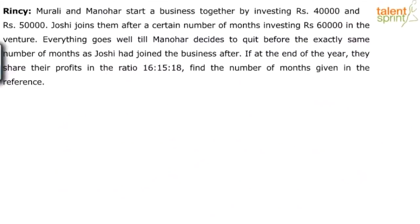Here's the next question, posted by Rinsi. This is a partnership question. Murali and Manohar start a business together by investing Rs. 40,000 and Rs. 50,000. Joshi joins them after a certain number of months, investing Rs. 60,000 in the venture. Everything goes well till Manohar decides to quit before exactly the same number of months as Joshi had joined the business after. If at the end of the year they share their profits in the ratio 16:15:18, find the number of months given in the reference.